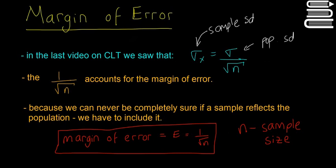So that's what the margin of error is, and it's dependent on the sample size. Margin of error equals E, which equals 1 over the square root of n, where n is our sample size.